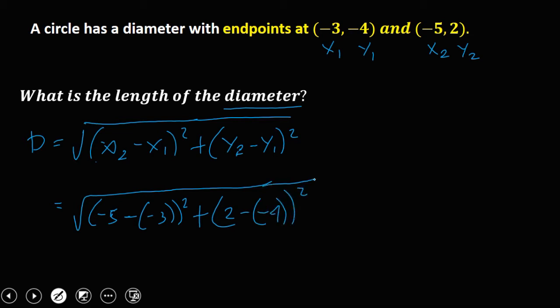Then simplify. So double negative, that's positive, so -5 + 3, that's -2 squared, plus 2 + 4, that's 6 squared.